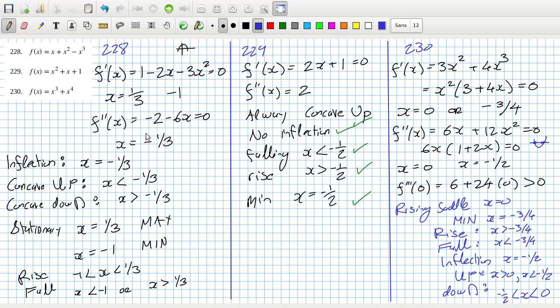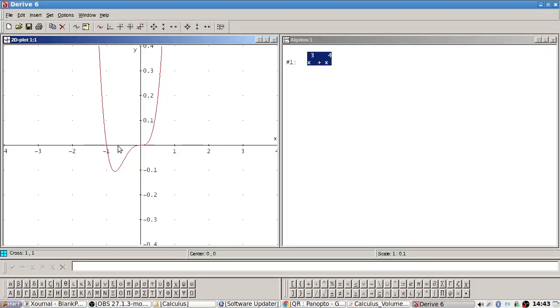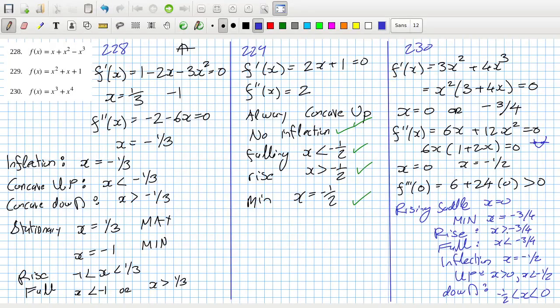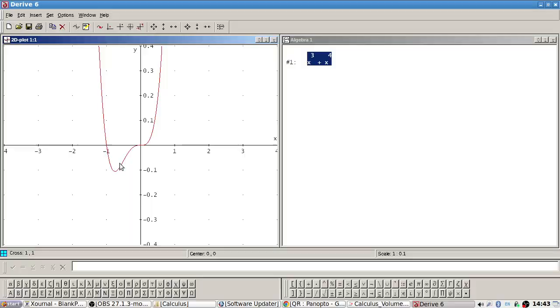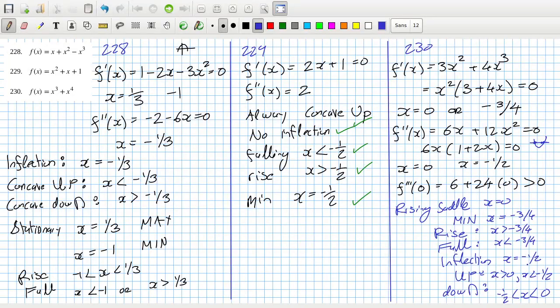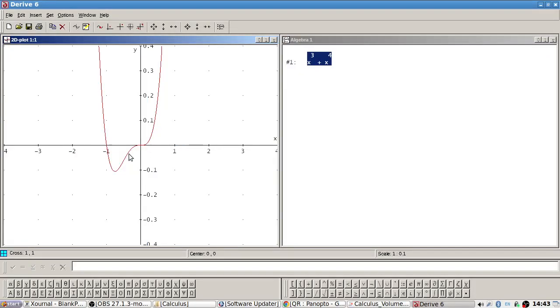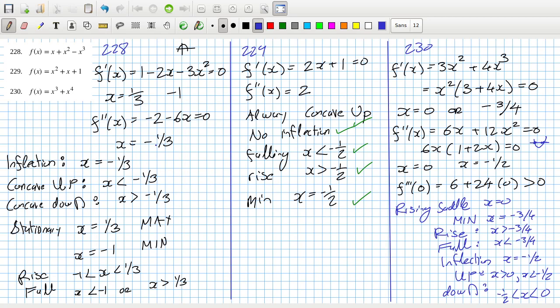Rising saddle at zero, correct. Minimum at minus three over four, correct. Rising when it's greater than minus three over four, correct. Falling when it's less than minus three over four, correct. Inflection at minus a half, so it goes from being convex to concave. Although, oh, another inflection at zero. Yeah, okay, I missed that one.